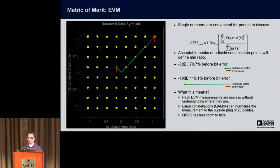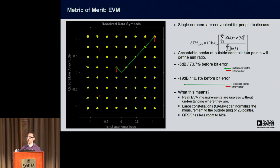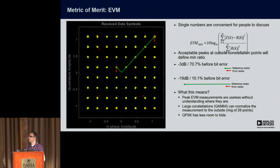EVM is an interesting metric because there's a unique normalizing effect within it. If you have a QPSK signal, the distance — which is your normalization term — will be smaller than if you have a 16-QAM or 64-QAM constellation. So there's a huge benefit of actually using a larger constellation with EVM, and you'll get smaller numbers. We'll show some of that in our testing.